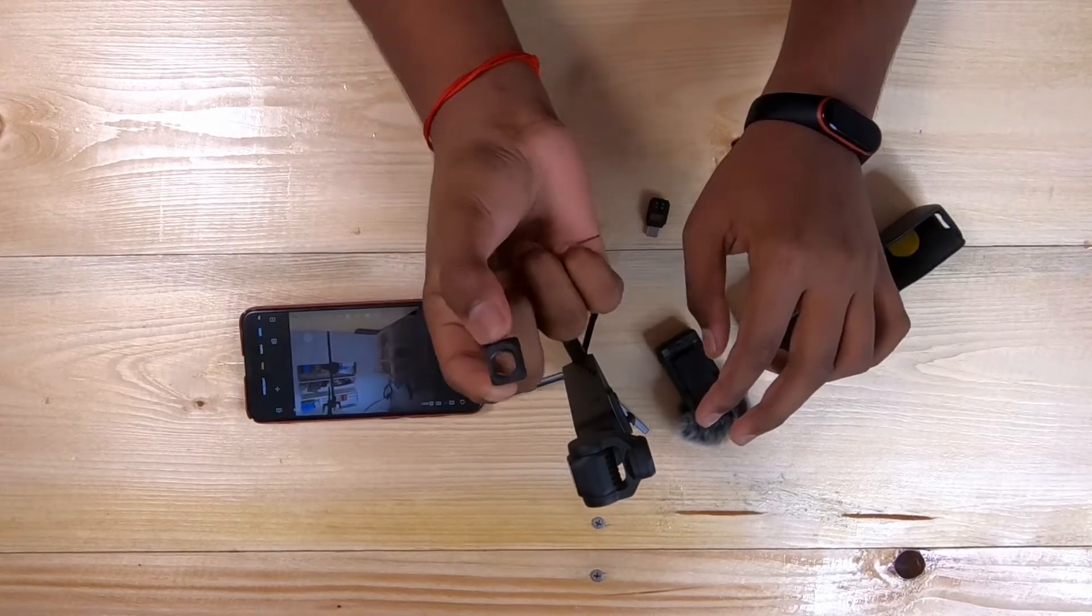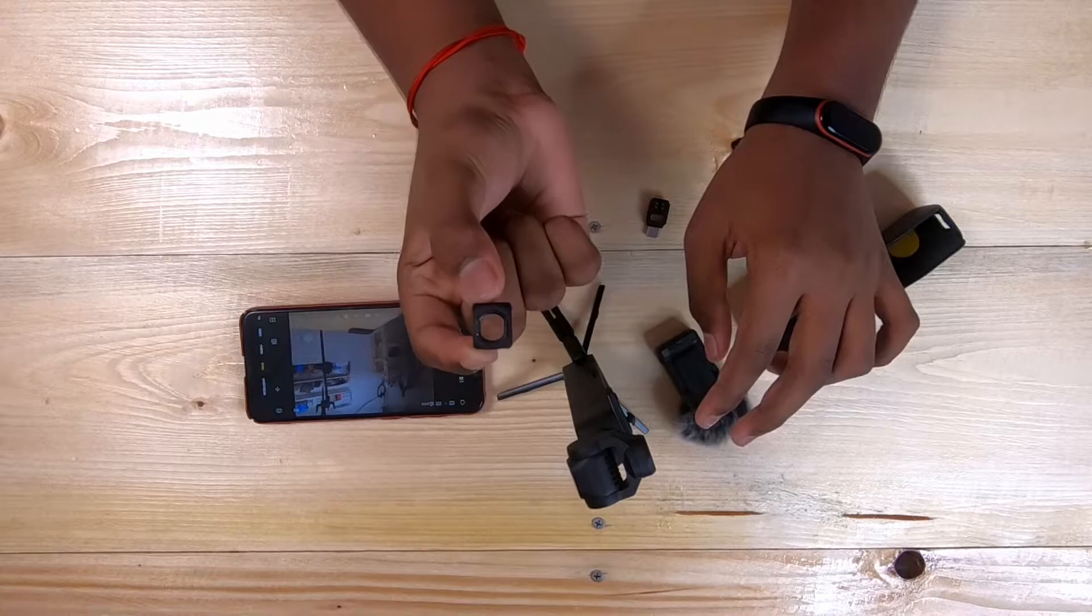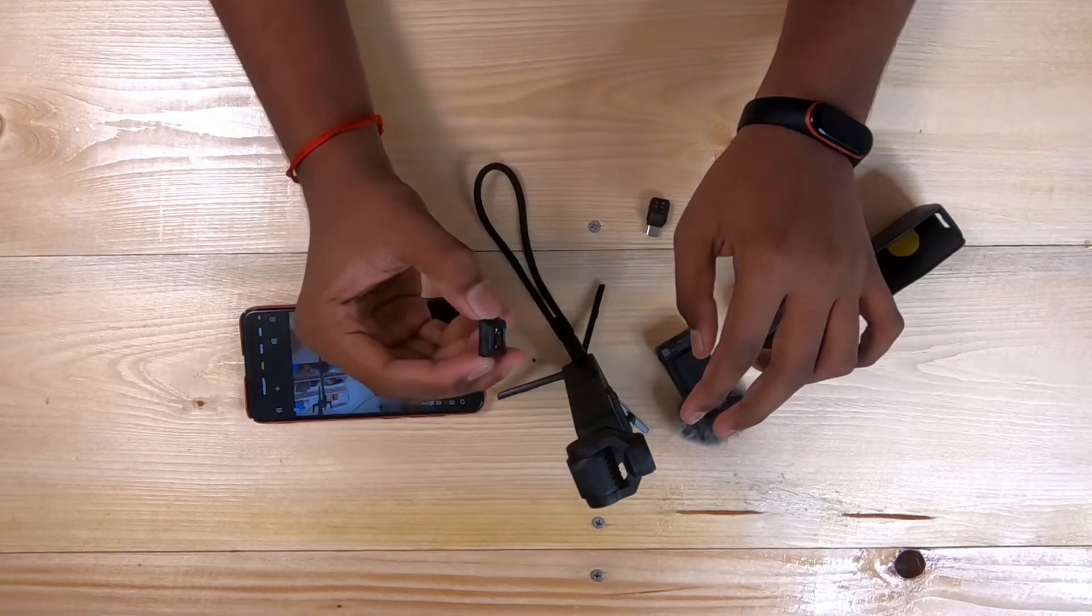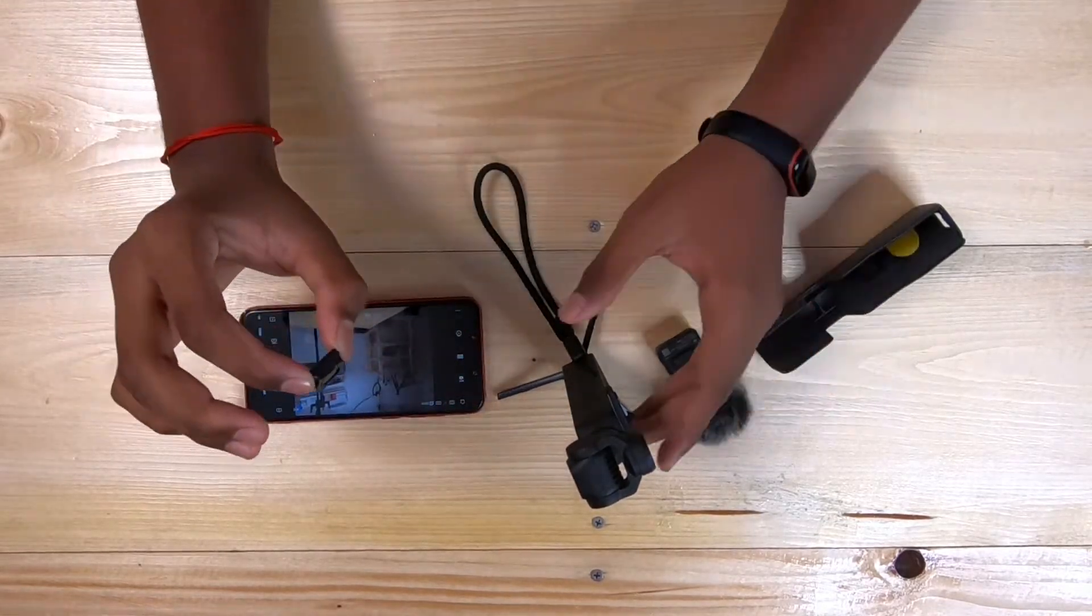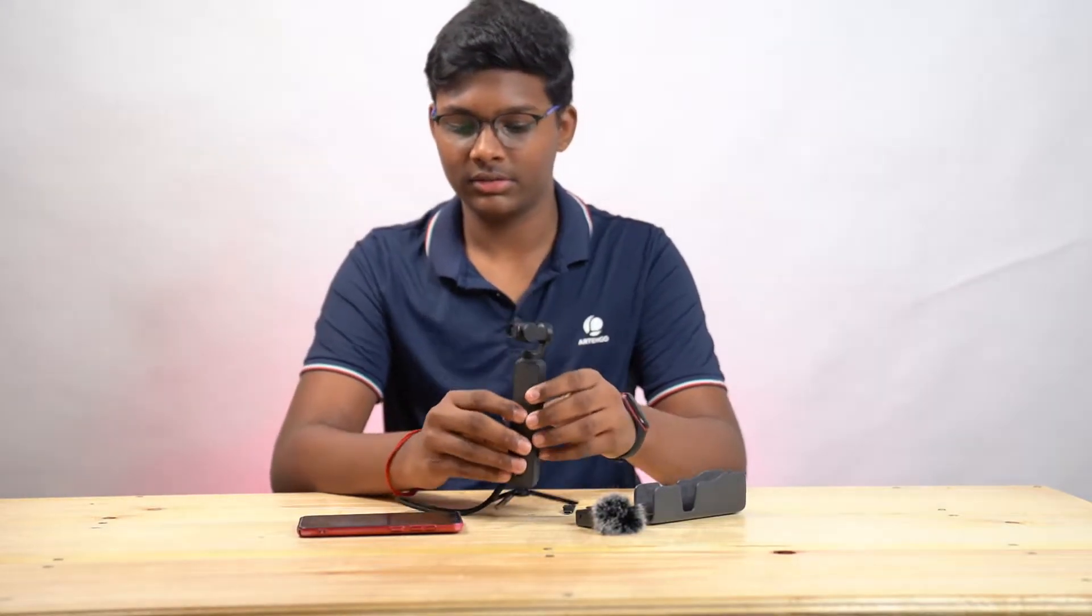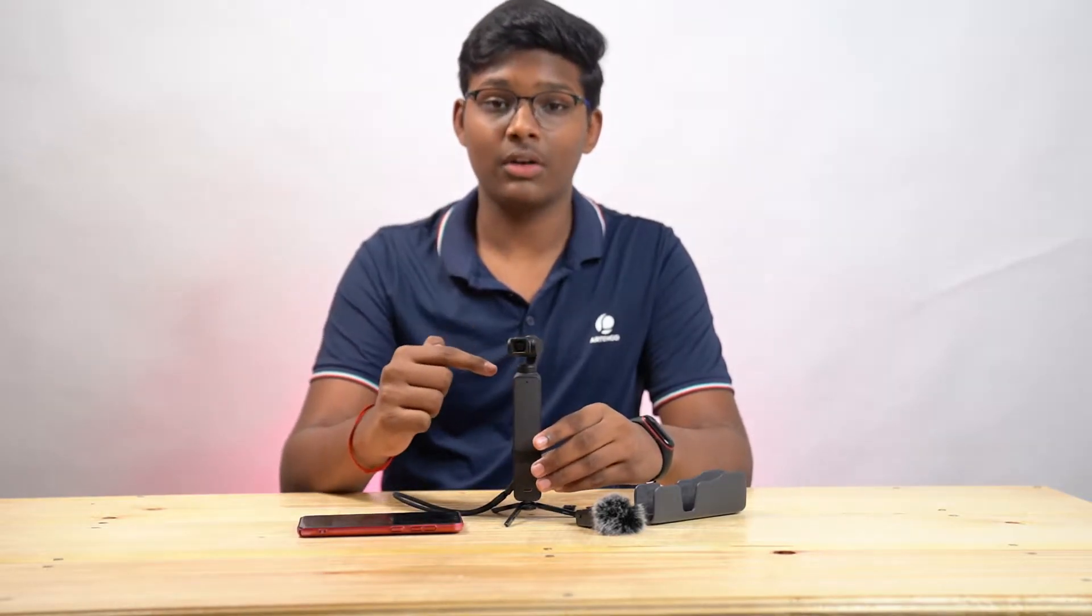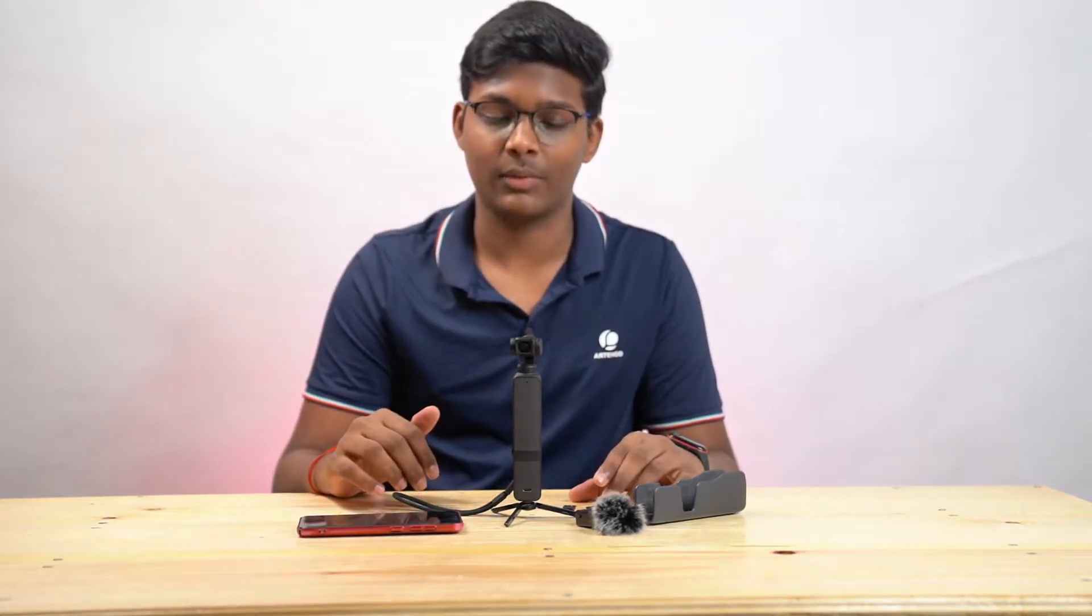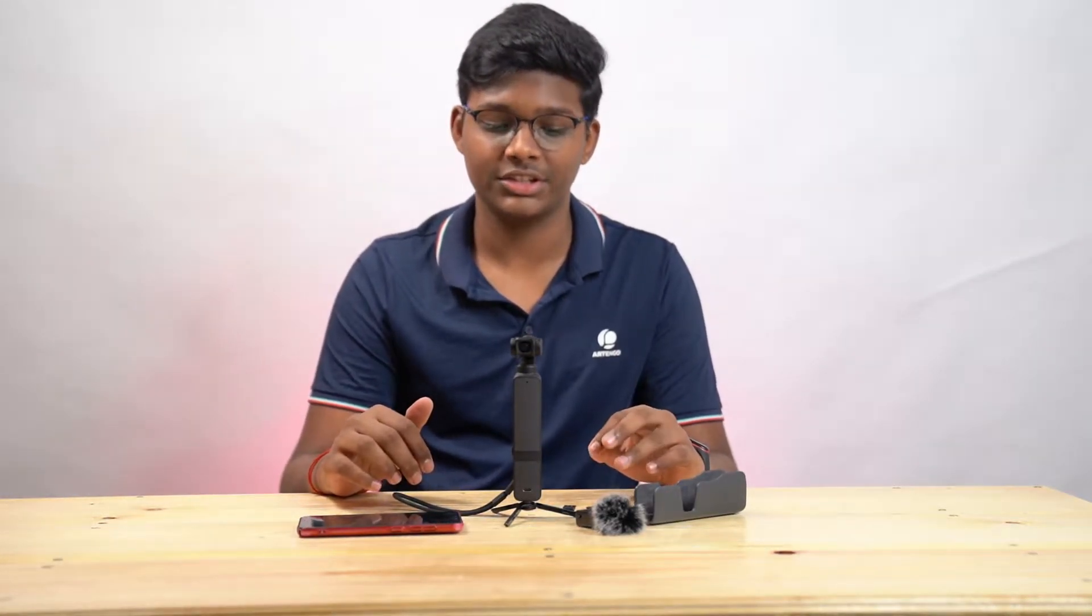And then, this one, you see over here, this is the wide-angle lens for the Pocket 2. This is very simple to install. Just take it, take it near the lens and just do that. After you do that, you'll get an indication on the device that wide-angle lens installed. So, once you get that, you can make sure that the wide-angle lens is installed on the DJI Pocket 2.